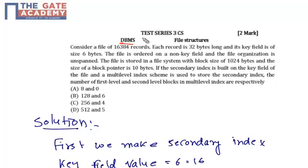Hello friends, this question is from database management system on file structures. Consider a file of 16,384 records, each record is 32 bytes long and its key field is 6 bytes.